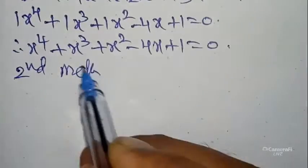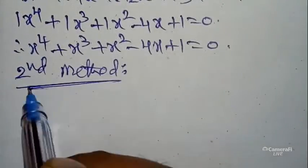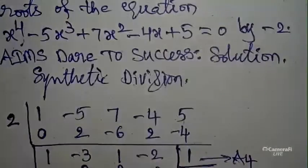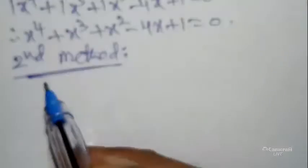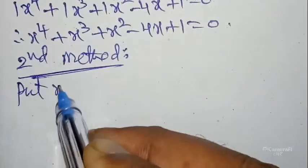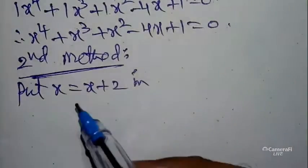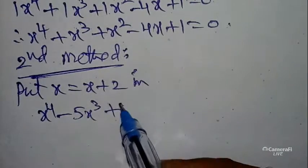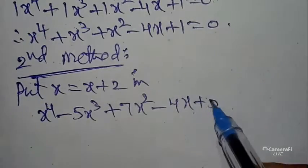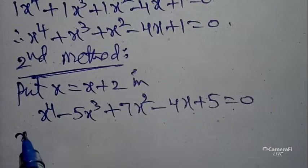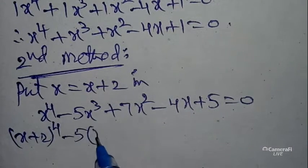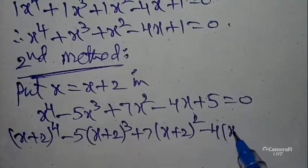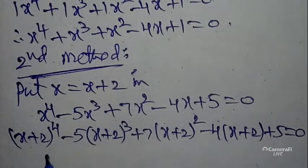I will tell you one more method — the second method. You can verify by substituting x = x + 2 in the given equation. The given equation is x⁴ - 5x³ + 7x² - 4x + 5 = 0. We get (x+2)⁴ - 5(x+2)³ + 7(x+2)² - 4(x+2) + 5 = 0.